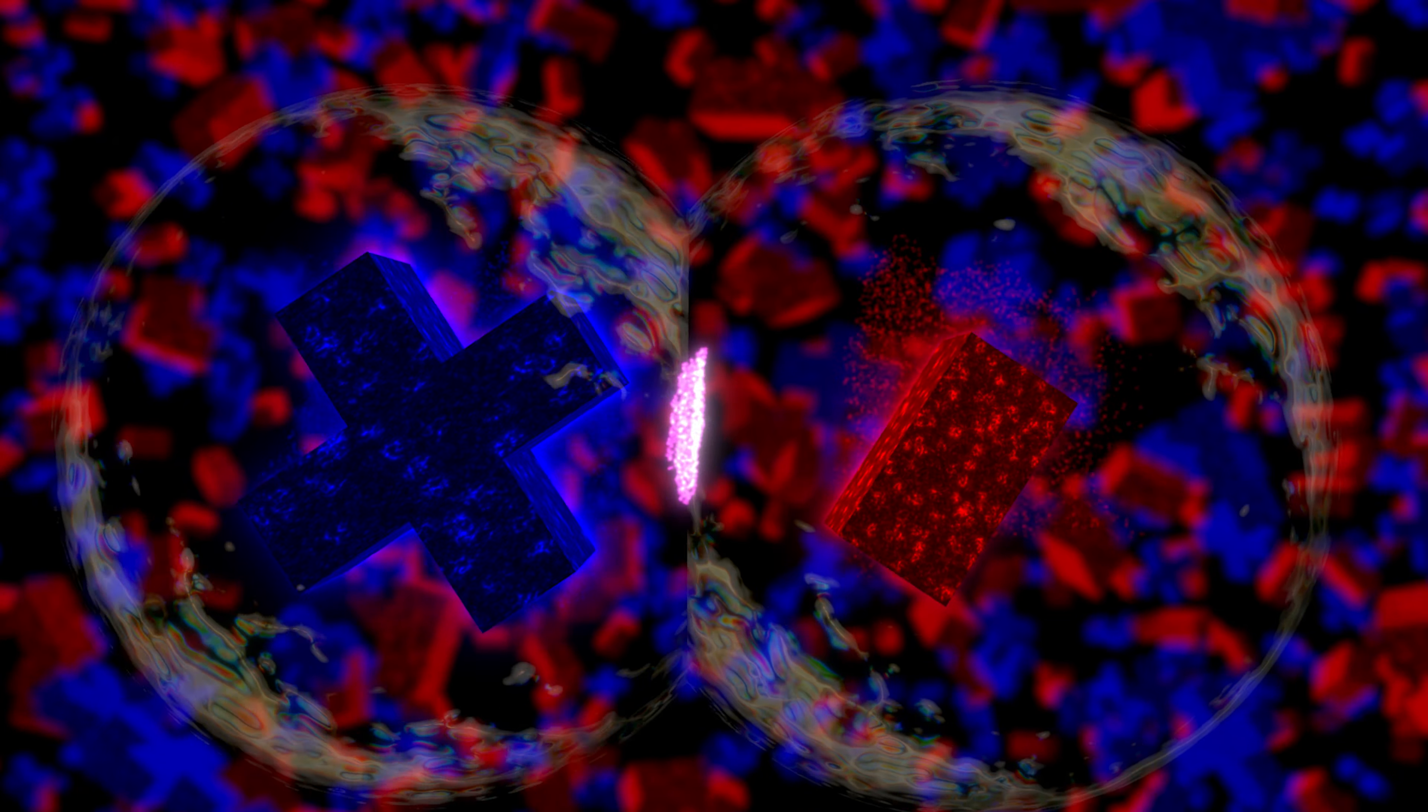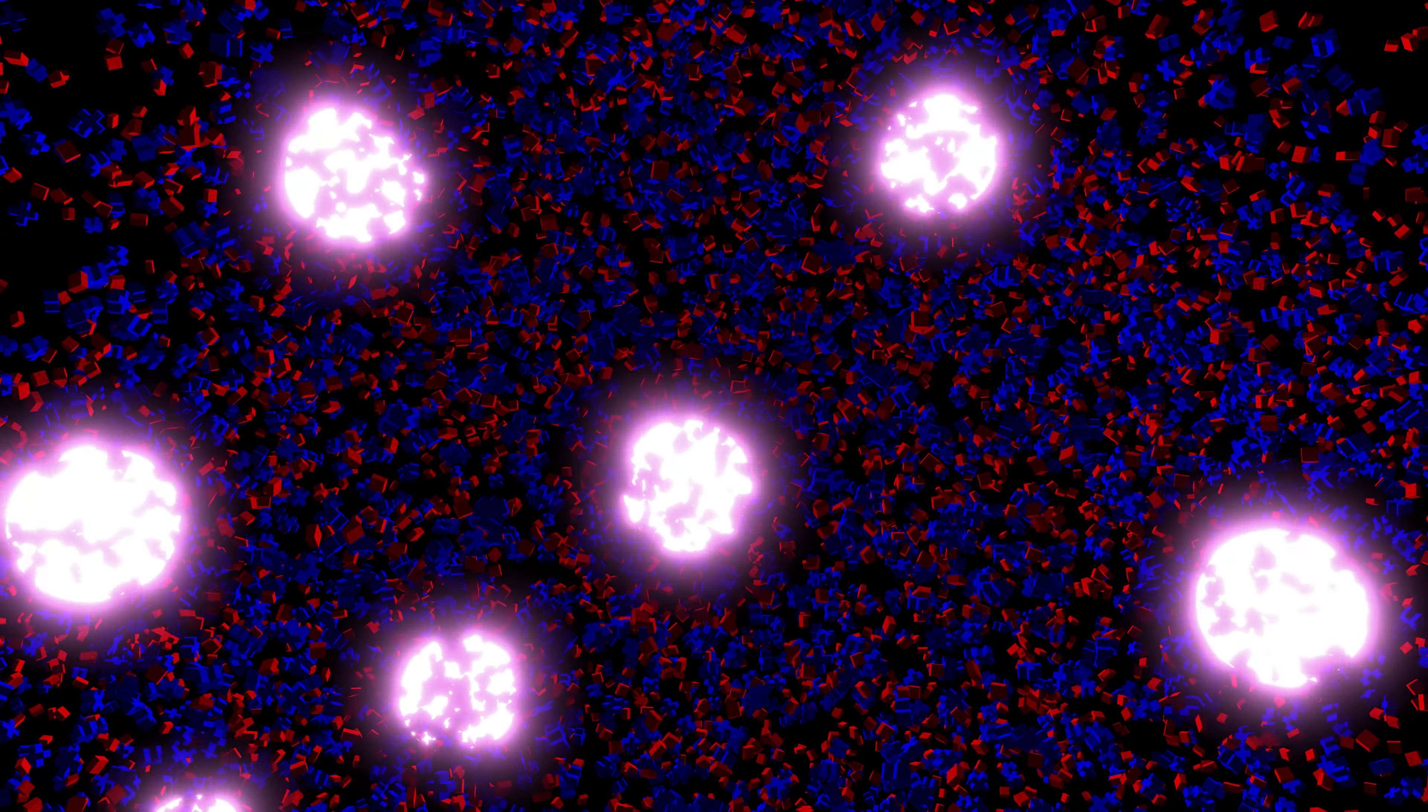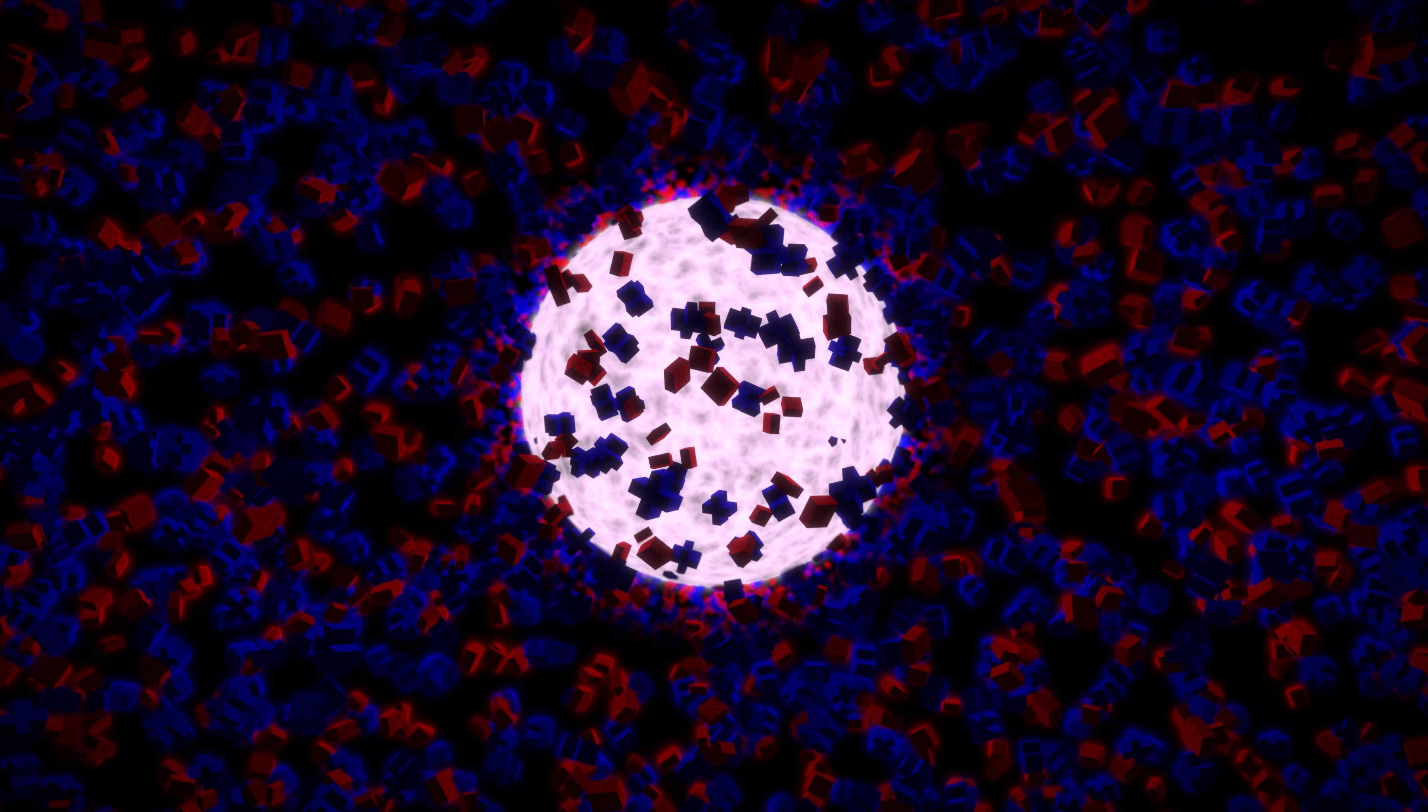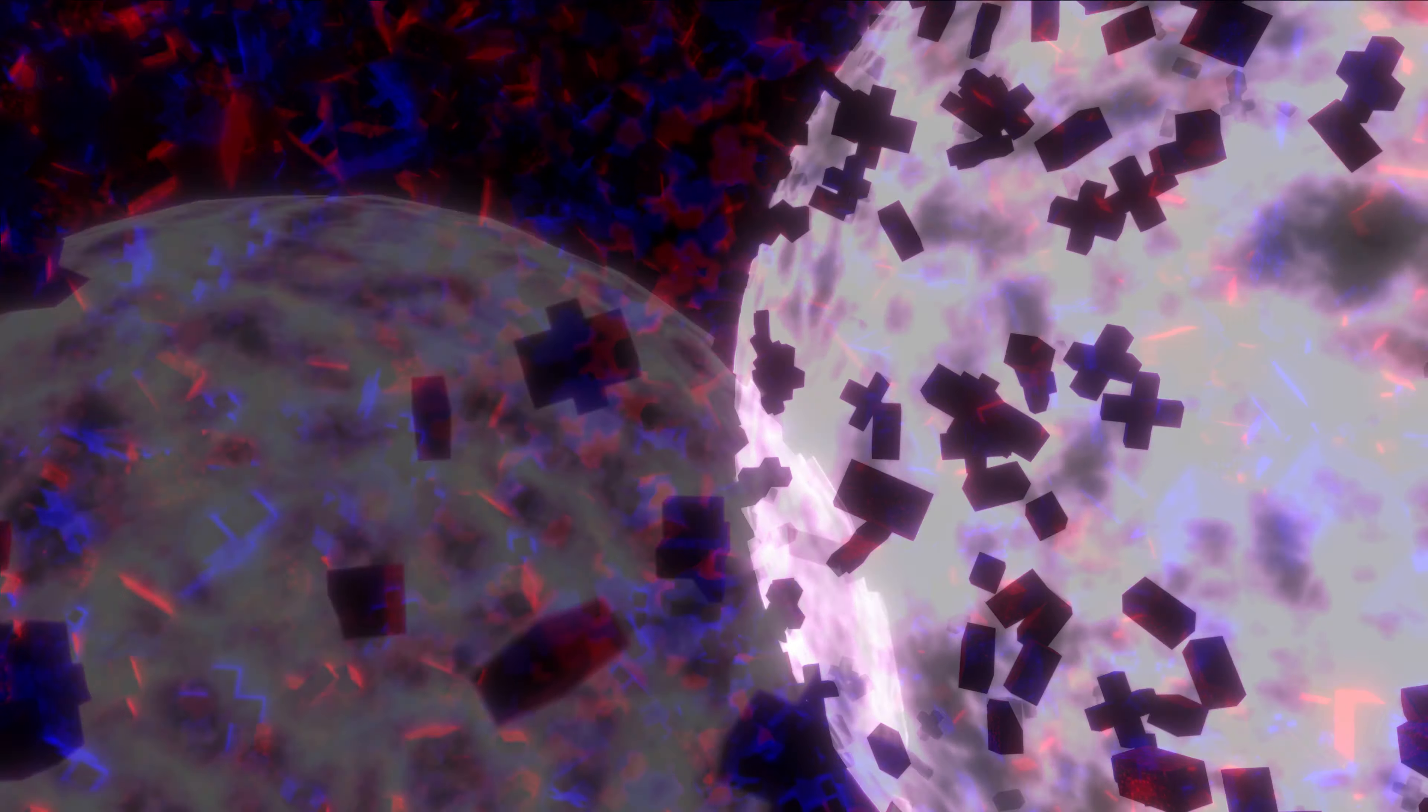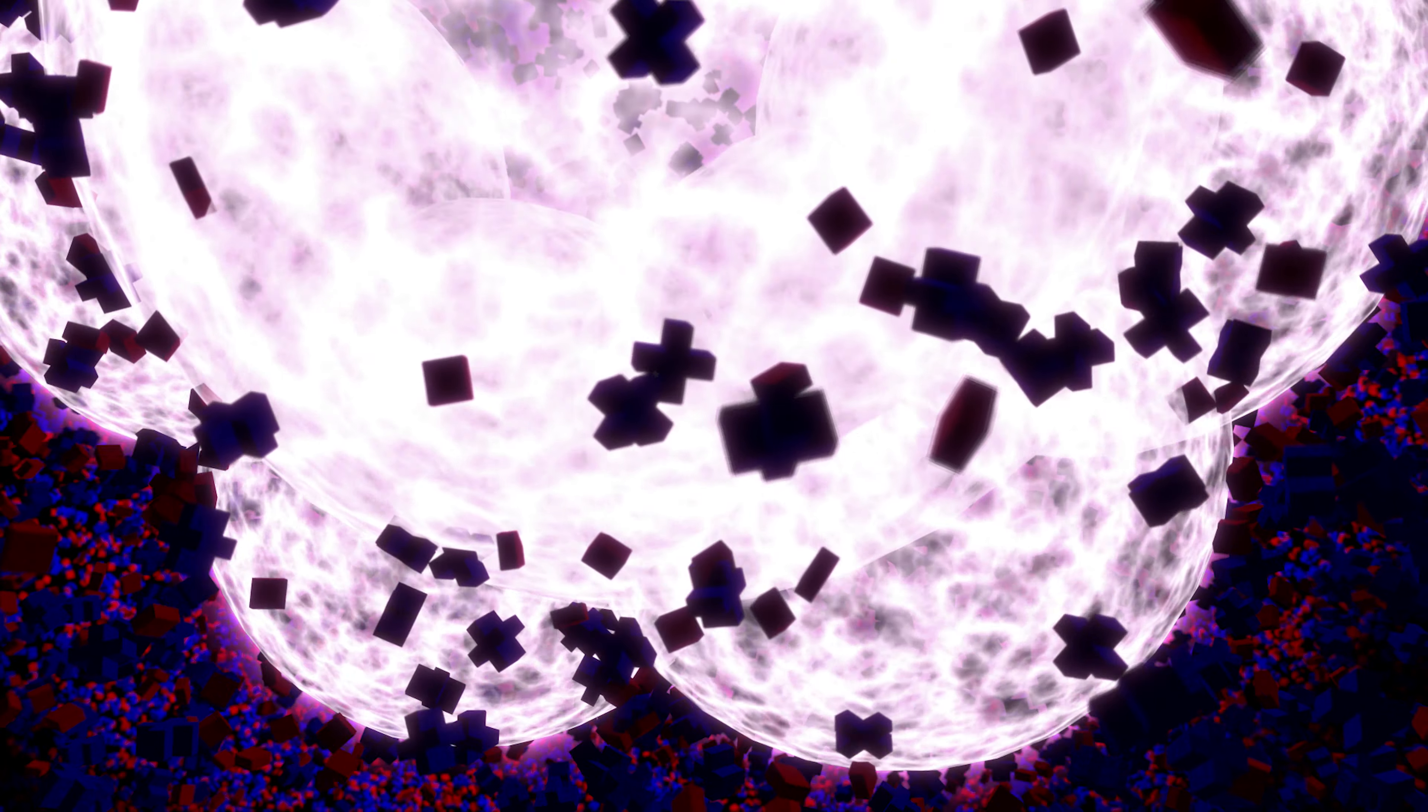This particle over here ran into its antiparticle, and over here, and here, and so on. At t equals one, the first generation of matter-antimatter annihilation began. Those annihilations pushed nearby particles to also collide with their opposites, and a chain reaction was set off.